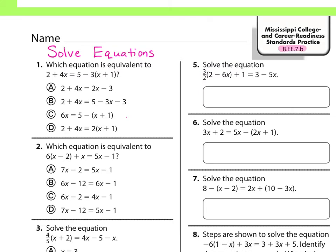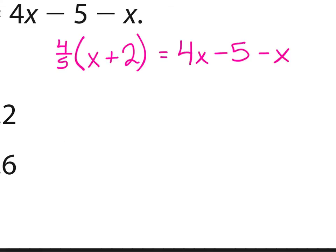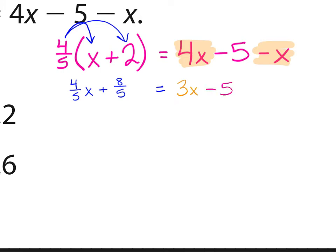Our next standard, 8EE7B, is just solving equations. Sometimes you might get an equation that has no solution or infinitely many solutions, but we're just solving them. We're going to start with problem number 3 — just solving the equation. We start by simplifying using the distributive property on the left side: 4/5 times X is 4/5 X, and 4/5 times 2 is 8/5. On the right side, notice we have like terms 4X and negative X — combining those gives 3X. We bring down that minus 5.